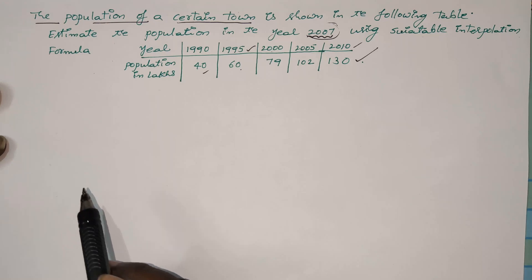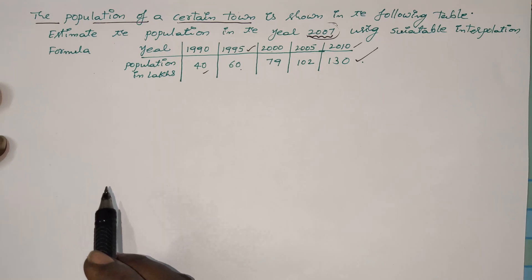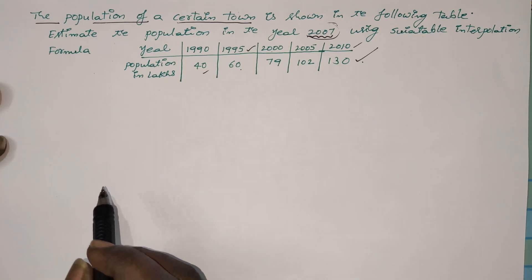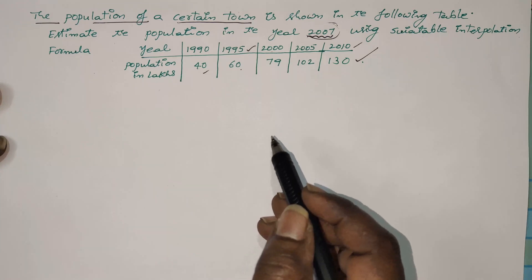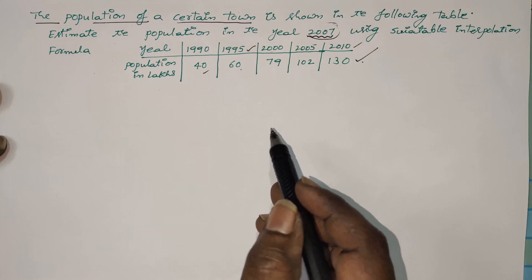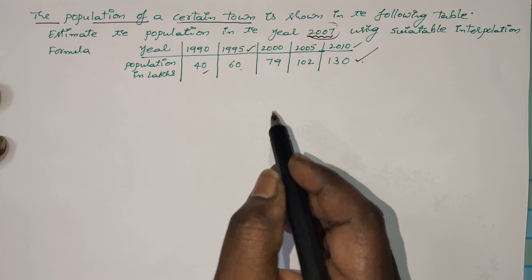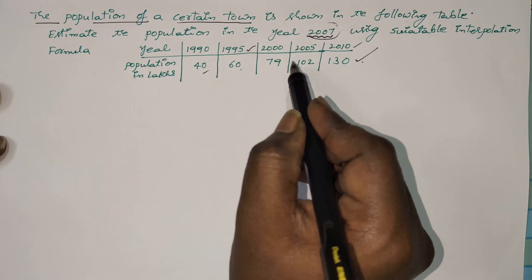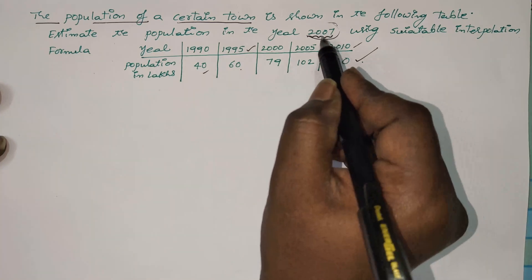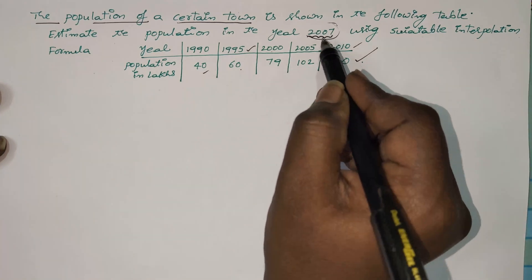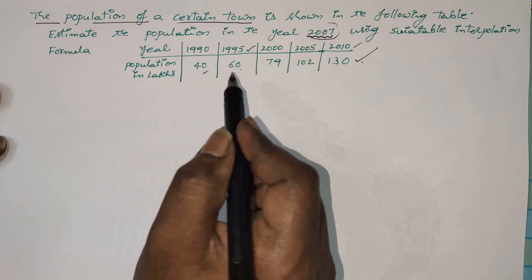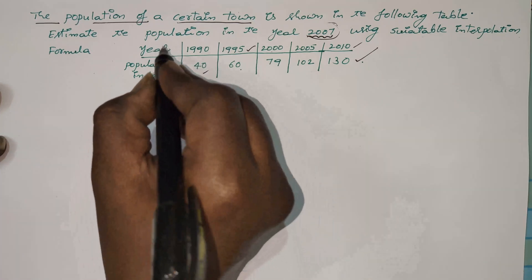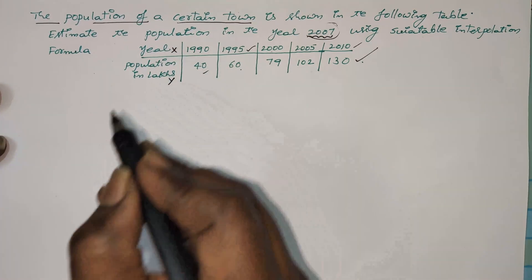In this problem you can easily observe the importance of interpolation. As we already know, interpolation is finding the unknown function value from the given data. Here we have to find out the function value at 2007. You should take population as function values — you can take years as x and population as y.